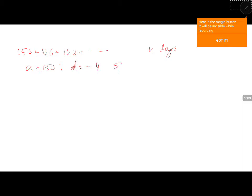Now Sn is equal to n by 2 into 2a plus n minus 1 into d. So it is n by 2 into 2 into 150 plus n minus 1 into minus 4, n by 2 into 300 minus 4 into n is minus 4n plus 4.